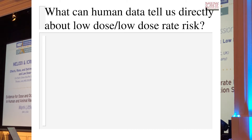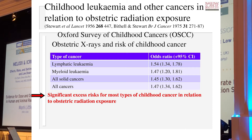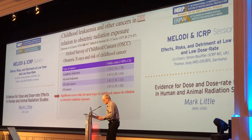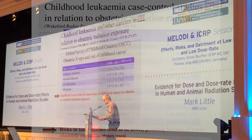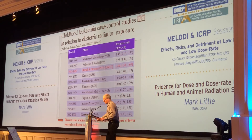Turning now to the second part of my talk about how we can directly estimate risk at low dose and low dose rate. I'm first going to look at studies of childhood cancer in relation to obstetric in utero radiation exposure. The most celebrated and probably the largest such study is the Oxford Survey of Childhood Cancers, the OSCC, which showed risks of about 50% elevation for a large number of malignant endpoints following obstetric radiation exposure. There have been a large number of other case control studies looking at the effects of obstetric radiation exposure.